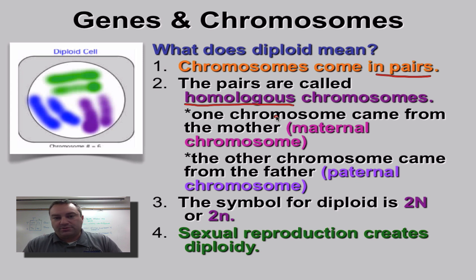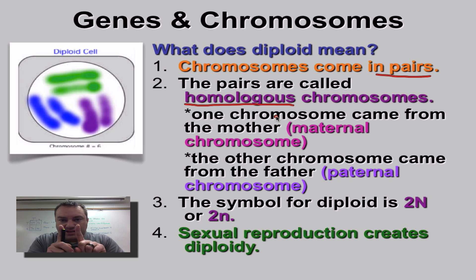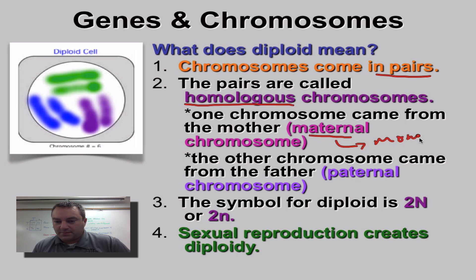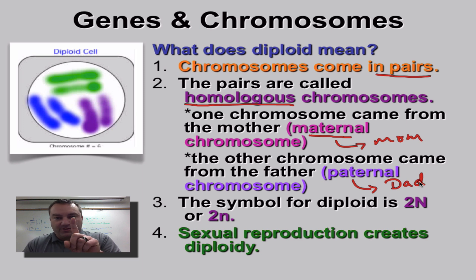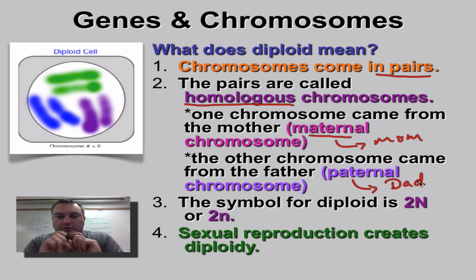These chromosomes are called homologous. The prefix 'homo' means the same, so these are the same chromosome. Even though you have two of them, they're the same. Basically, you get one from your mom — maternal means mom — and one from your dad — paternal means dad. So your mom and dad give you homologous chromosomes: one from mommy and one from daddy, making one pair.